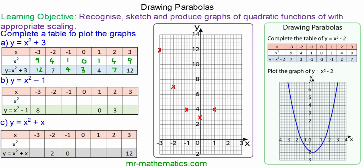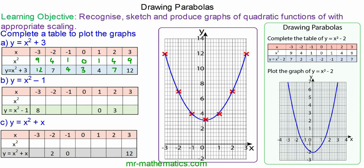When x is 1, y is 4. When x is 2, y is 7. And when x is 3, y is 12. Here we've got a smooth parabola with a turning point at 0, 3.